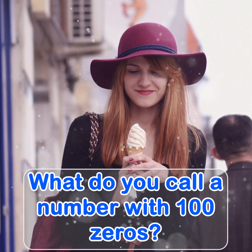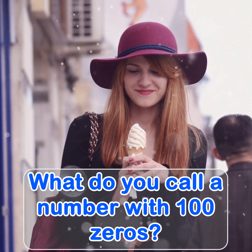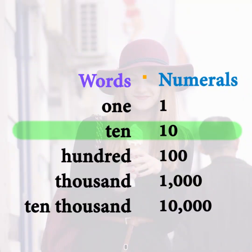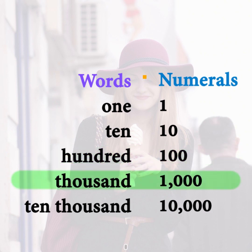Let's start with some small numbers. I think you know these pretty well: 1, 10, 100, 1000, 10,000. How many zeros in 10,000? 4.